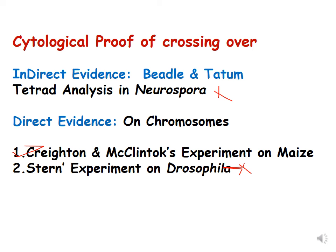There are two direct evidences. This is called direct evidence because the products of crossing over can be observed under a microscope — we can directly observe the chromosomes. In indirect evidence, chromosomes are not observed; instead, their expression in the form of spore color in the ascus of Neurospora is observed. Two experiments provide direct evidence: first, Creighton and McClintock's experiment on maize, and second, Stern's experiment on Drosophila, which is not in your syllabus.